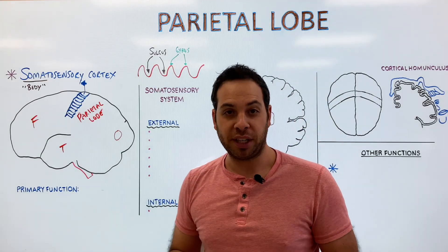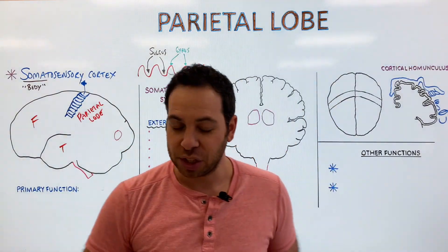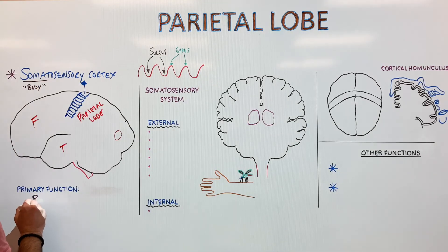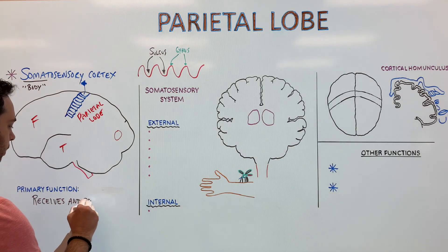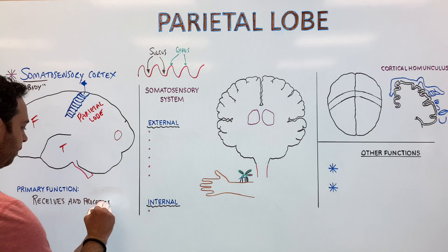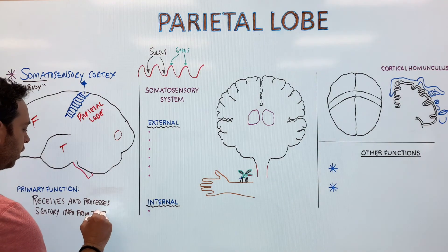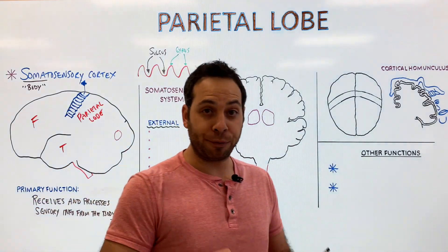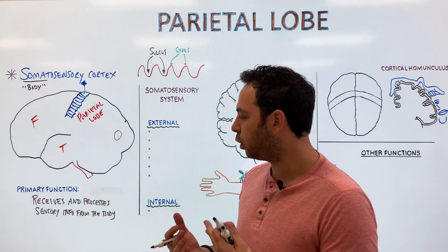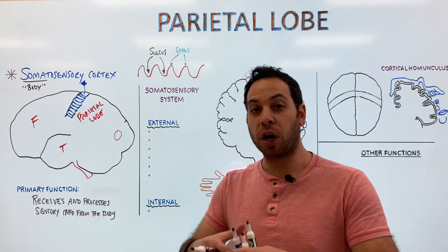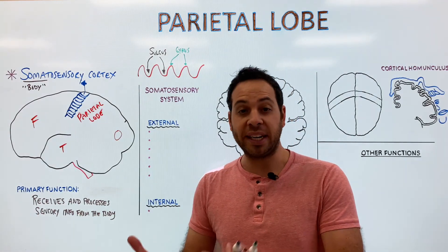When we think about the function of the parietal lobe, its primary function relates to the somatosensory cortex: it receives and processes sensory information from the body. This region is also part of a larger system called the somatosensory system, which helps register changes both outside and inside the body.